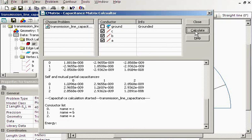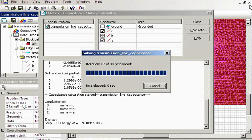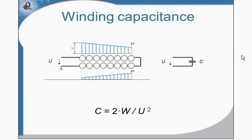The next example I would like to show is somewhat unusual: we will calculate the capacitance of a winding. Here you can see the winding on the screen — this is the axis of rotation. At high frequency, a winding features not only inductance and resistance but also capacitance. Let's take a closer look at the winding construction.